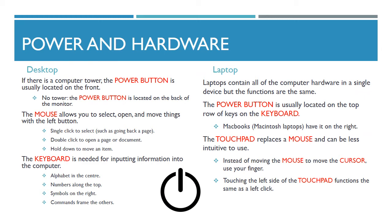Before I go any further, I should probably mention the power button and where to find it on different computers. This is a symbol on the screen, so that should help you find it if you are using an unfamiliar computer. If there is a tower, the power button will most likely be found at the front. This is the same if the tower is a small box or attached to the back of the monitor. If there is no tower, the power button will be on the back of the monitor itself, usually in the lower right-hand corner — run your fingers along the back of the bottom of the screen until you feel a small depression or button. On a laptop, the power button is usually found at the top of the keyboard; it is smaller, but it will have the same symbol on it.